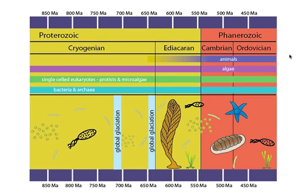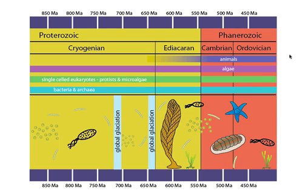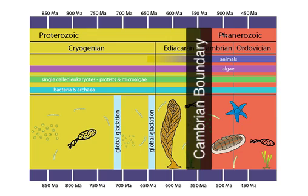This timescale encompasses the last few hundred million years of the Proterozoic and the first 150 or so million years of the Phanerozoic. The transition from the yellow-colored Proterozoic to the red-colored Phanerozoic is the Cambrian boundary, one of the most important markers in Earth's history.